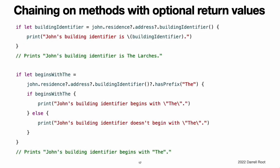Chaining on methods with optional return values. The previous example shows how to retrieve the value of a property of optional type through optional chaining. You can also use optional chaining to call a method that returns a value of optional type and to chain on that method's return value if needed. This example calls the address class's building identifier method through optional chaining. This method returns a value of type optional string. The ultimate return type of this method call after optional chaining is also optional string. If you want to perform further optional chaining on this method's return value, place the optional chaining question mark after the method's parentheses. Note: you place the optional chaining question mark after the parentheses because the optional value you are chaining on is the building identifier method's return value, not the building identifier method itself.